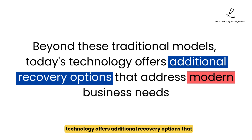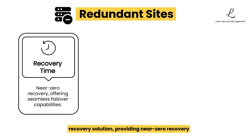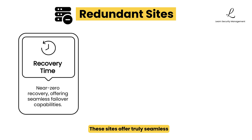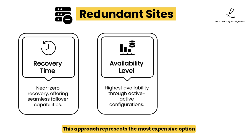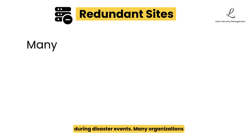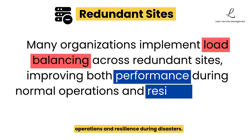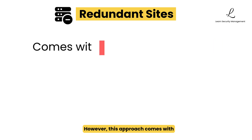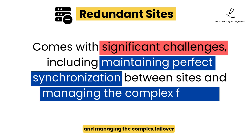Beyond these traditional models, today's technology offers additional recovery options. Redundant sites represent the highest tier of recovery solution, providing near-zero recovery times measured in seconds to minutes with truly seamless failover. With active-active configurations, both sites simultaneously process workloads, maximizing availability and eliminating downtime during transitions. This approach represents the most expensive option but effectively eliminates business impact during disaster events. Many organizations implement load balancing across redundant sites, improving both performance during normal operations and resilience during disasters. However, this approach comes with significant challenges, including maintaining perfect synchronization between sites and managing complex failover processes.